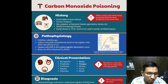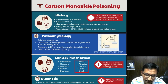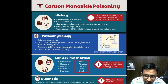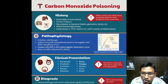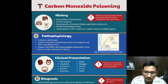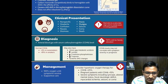Symptoms are often non-specific, meaning they can be mistaken for symptoms of other conditions. These symptoms can include headache, dizziness, nausea, confusion, and general malaise. More severe poisoning can lead to ataxia — loss of coordination — myalgias (muscle pain), seizures, coma, and even death. Notably, a red coloration of the skin is a rare and late-occurring sign in carbon monoxide poisoning.